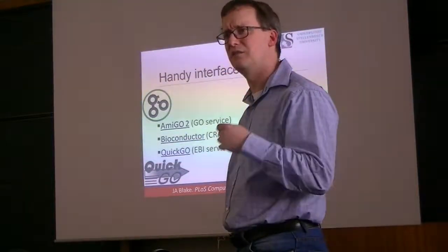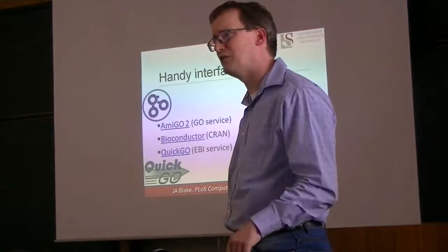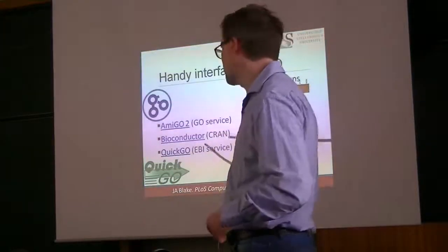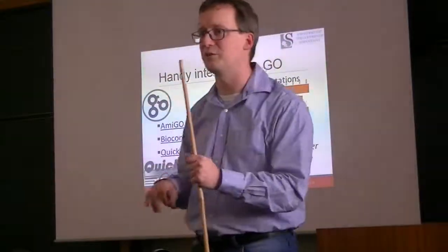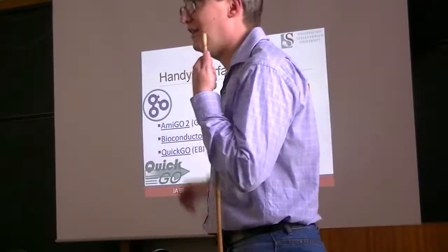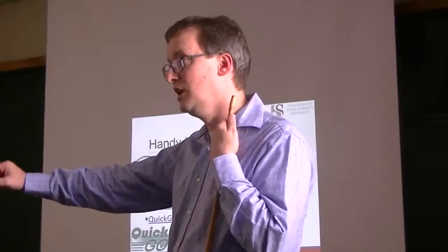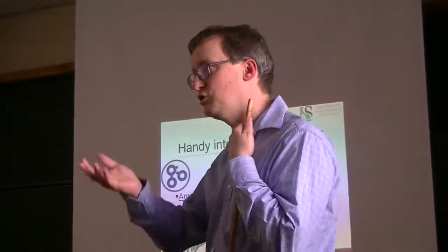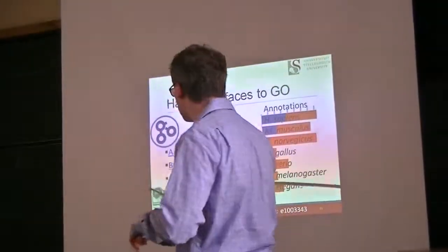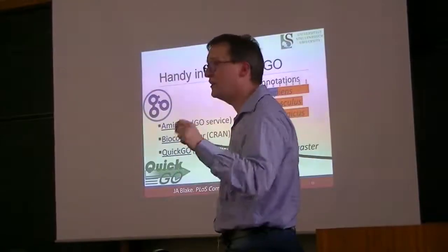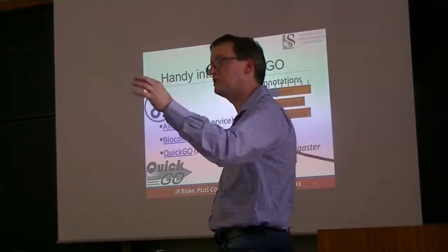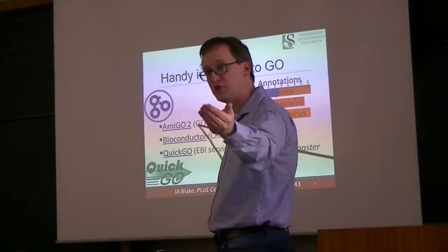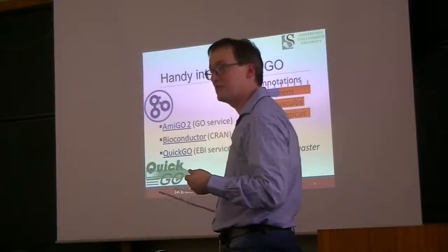Amigo 2 is a service made available by GO itself. Bioconductor is certainly your friend because it touches almost every kind of algorithm out there. We see that they have an access by which you can get GO terms computed directly against your gene lists or whatever that you've produced within Bioconductor stuff. Just to remind you, Bioconductor is one of these tool sets that is connected to R.